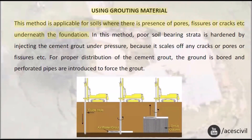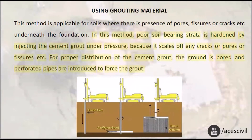Using grouting material: This method is applicable for soils where there is presence of pores, fissures, or cracks underneath the foundation. The poor soil bearing strata is hardened by injecting cement grout under pressure, because it seals off any cracks, pores, or fissures. For proper distribution of the cement grout, the ground is bored and perforated pipes are introduced to force the grout.